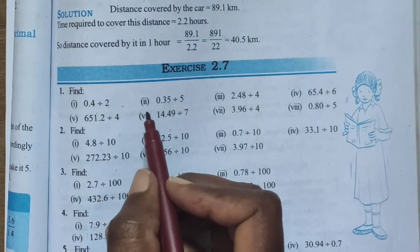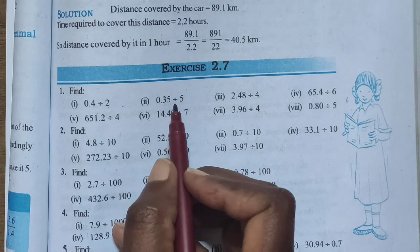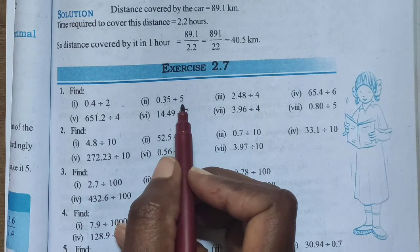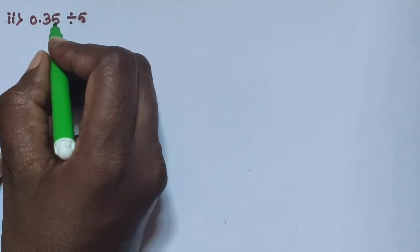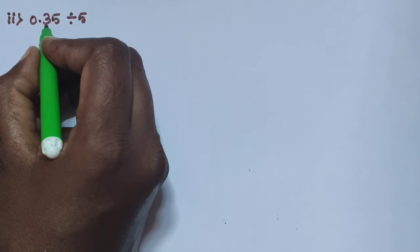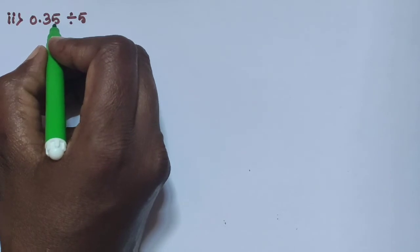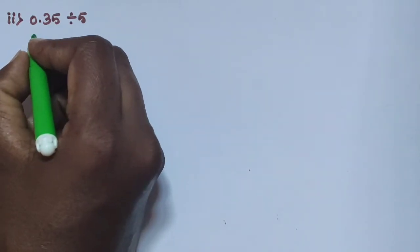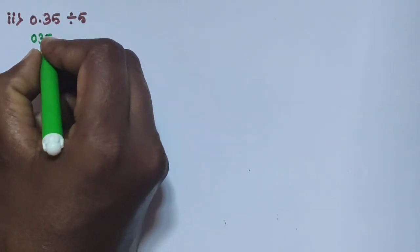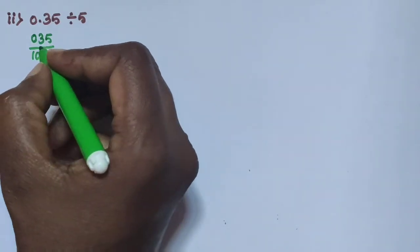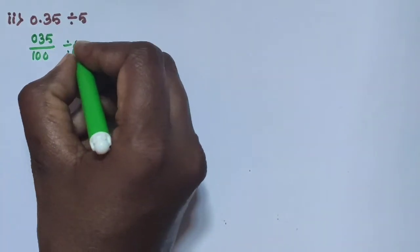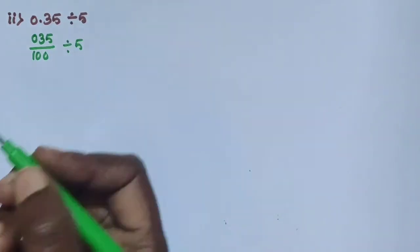Next, sub question 2: 0.35 is divided by 5. Using the same process, 0.35 has digits in the 10th and 100th place, so divide by 100. Write 0.35 as 35 divided by 100, then divide by 5.